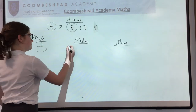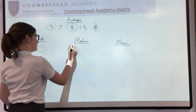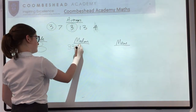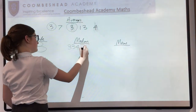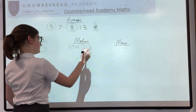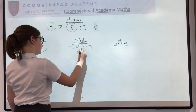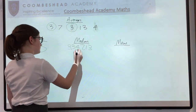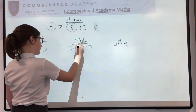The next one is median. You put them in order, then find the one in the middle, which in this case is four.